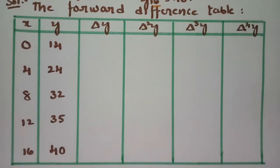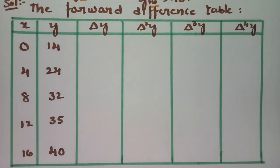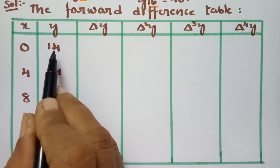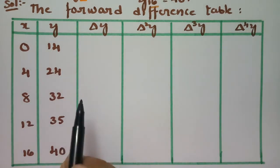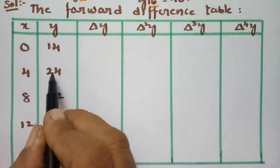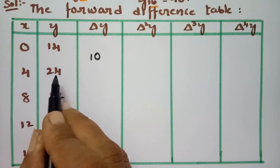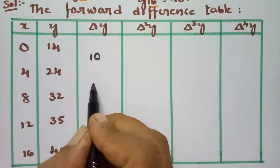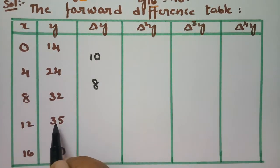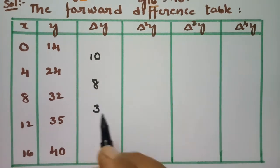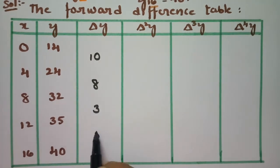Here is the forward difference table. Now we have to complete it. For the first difference: 24 minus 14 equals 10, 32 minus 24 equals 8, 35 minus 32 equals 3, and the next value is 5.